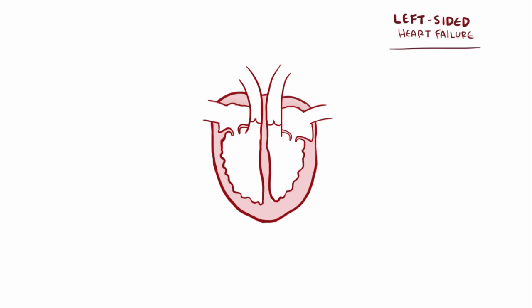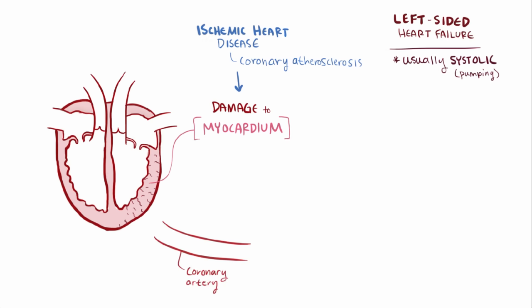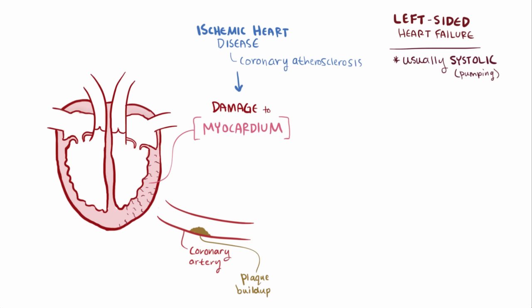Left-sided heart failure is usually caused by systolic or pumping dysfunction, typically due to damage to the myocardium, meaning it can't contract as forcefully. Ischemic heart disease caused by coronary artery atherosclerosis, or plaque buildup, is the most common cause — less blood and oxygen gets through the coronary artery to the heart tissue, which damages the myocardium. If the coronary is blocked completely and the person has a heart attack, they may be left with scar tissue that doesn't contract at all.